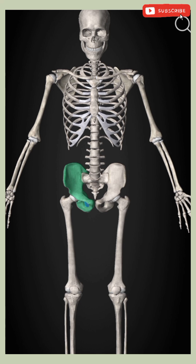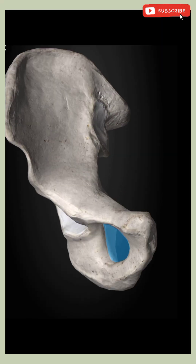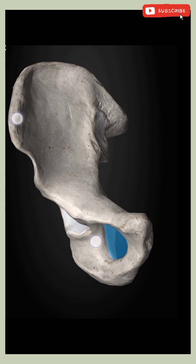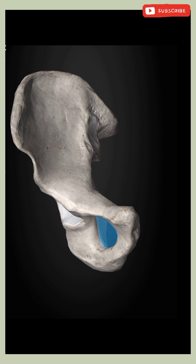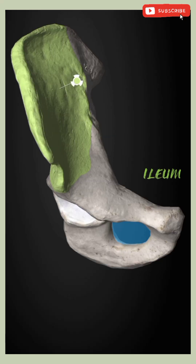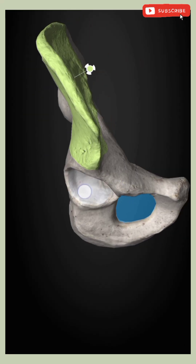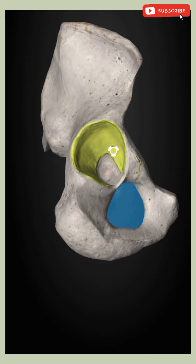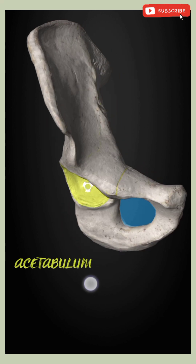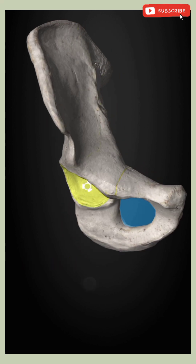The hip bone is a large irregular bone. The flat expanded ileum forms the upper part of the bone that lies above the acetabulum, which is marked over here in green color. This cavity is termed as the acetabulum, which is directed laterally, and the obturator foramen lies below the acetabulum.